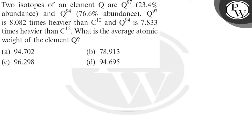Let's see this question. Two isotopes of an element Q: Q97, which is 23.4% abundant, and Q94, which is 76.6% abundant. Q97 is 8.082 times heavier than C12, and Q94 is 7.833 times heavier than C12. What is the average atomic weight of Q?